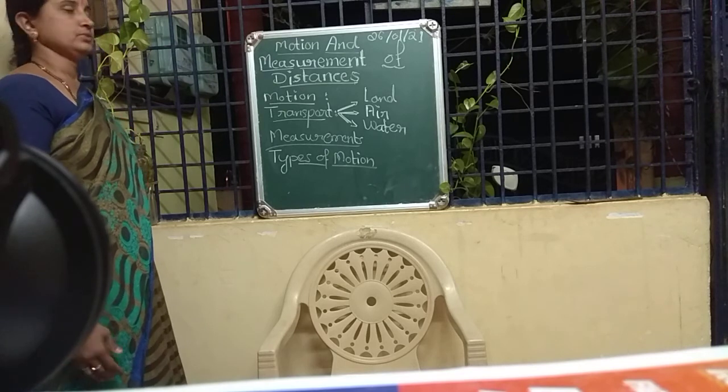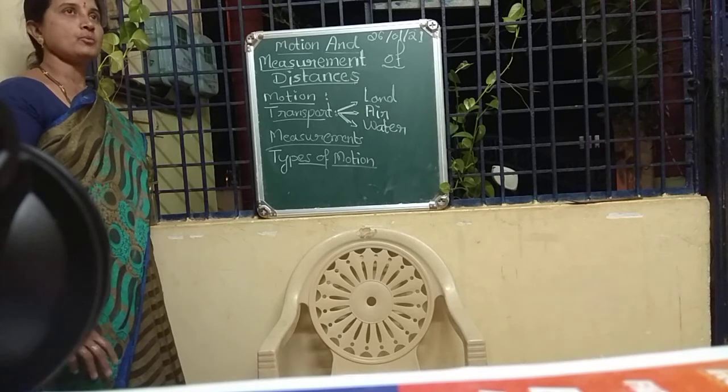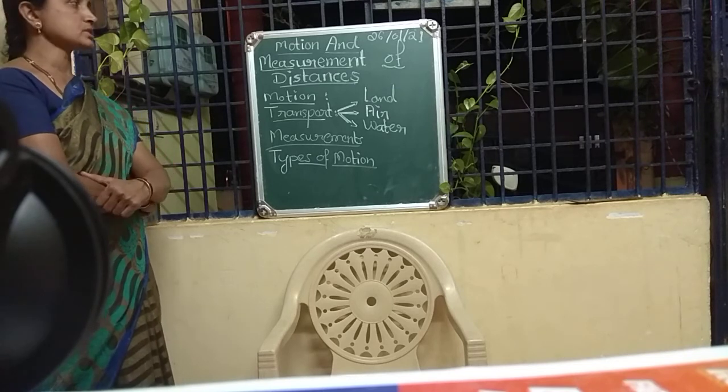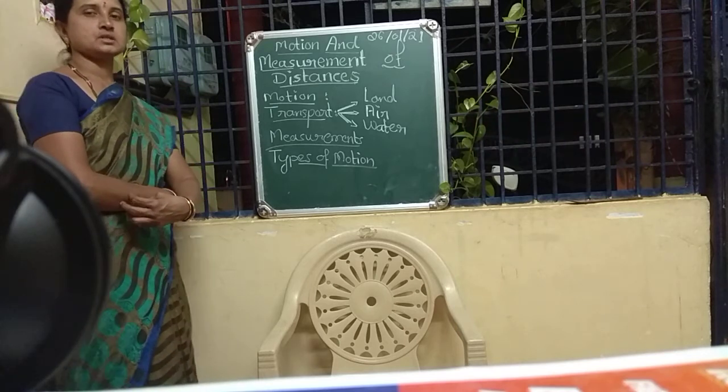Welcome to Virtual Class, Subject: Science. The concept is motion and measurement of distances. There is a term used for the movement of animals, objects, or human beings from one place to another. Suppose one car moves from Dharwad to Hubli, or students move from home to school, teachers also move from school to home. All these movements we call in science as motion. Motion is the movement of objects or animals with respect to time from one place to another place.